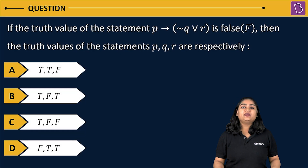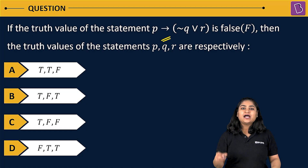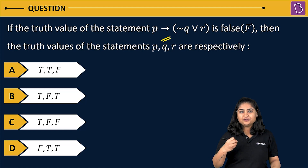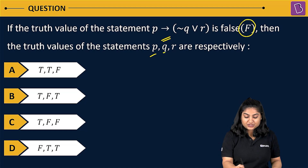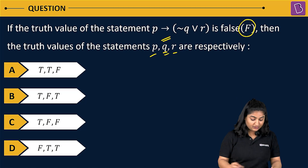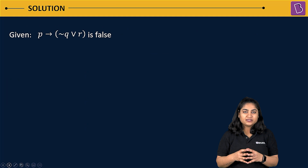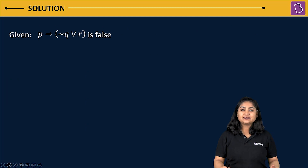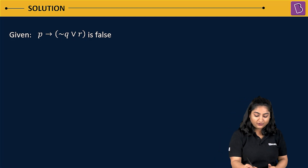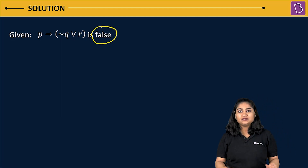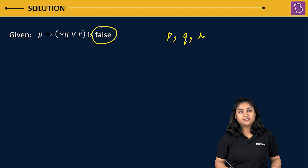In this question, we have been given a Boolean expression which is P implies negation Q or R, and it has been given that the truth value of this statement is false. We have to calculate the truth values of P, Q, and R respectively.